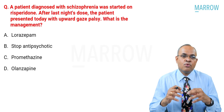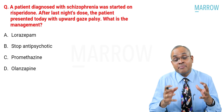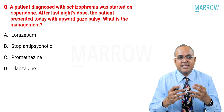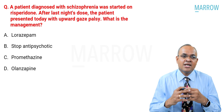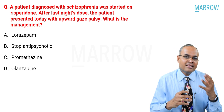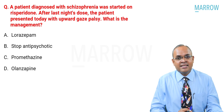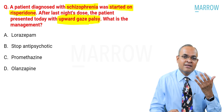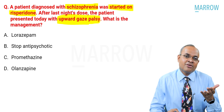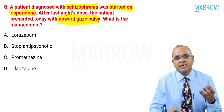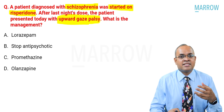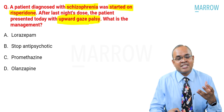A patient diagnosed with schizophrenia was started on risperidone. After last night's dose, the patient presented today with upward gaze. The key words to look at: the patient is having schizophrenia and was started on an antipsychotic like risperidone. A single dose has been given and he presents the next day with upward gaze palsy.